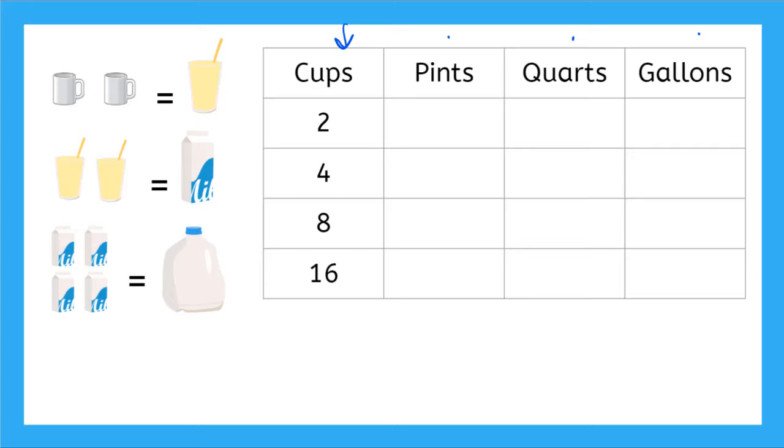So let's start with this first one here. It says two cups, and we want to find out how many pints are in two cups. We know that from our chart over here. We know two cups is equal to one pint. Okay, so let's go down then. Now we have four cups. If I have four cups, how many pints do I have? Well, let's see. If I had another two cups here, I would have another pint. So I would have two pints total.